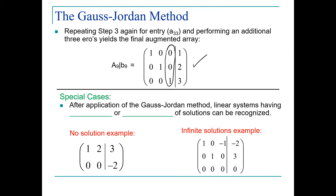The new material for this lecture starts here. We're going to look at the special cases in which when you apply the Gauss-Jordan method, you are not guaranteed to get an optimal solution. Actually, there's no guarantee that you're going to find a unique solution for your linear equations — a solution that will satisfy all the set of linear equations. There are some special cases: after the application of the Gauss-Jordan method, linear systems having no solution or an infinite number of solutions can be recognized.